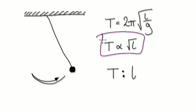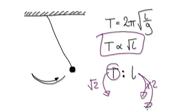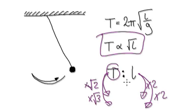What this means is: if you double the length of the string, then the time will be multiplied by √2. If you triple the length of the string, then the time will be multiplied by √3. We've seen this in the past.